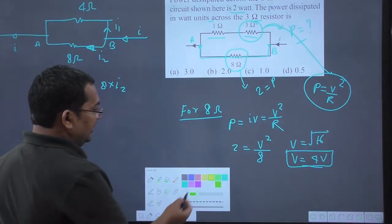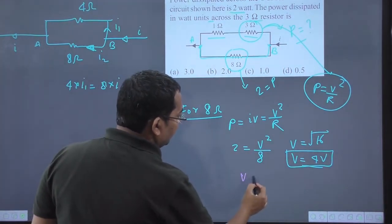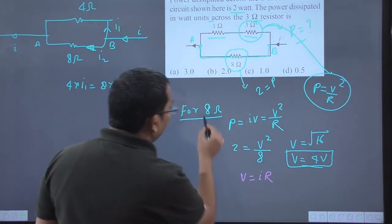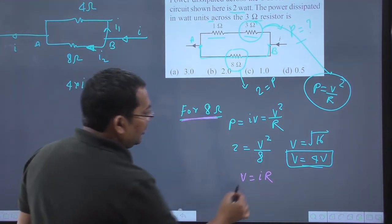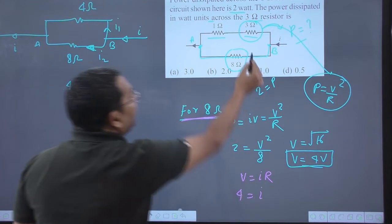Since data is given for the 8 ohm resistor, for the 8 ohm resistor we can apply V equals IR. The voltage across it is 4 volts, let the current be I2.